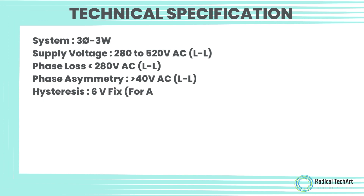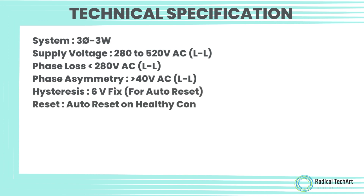Phase loss: 280 volt AC line to line. Phase asymmetry: 40 volt AC line to line. Hysteresis: 6 volt fixed for auto reset.